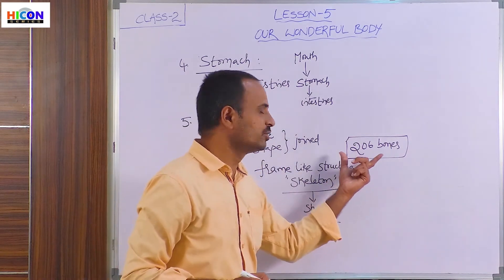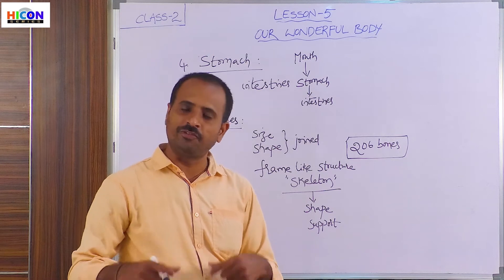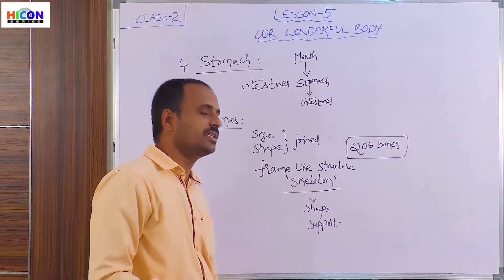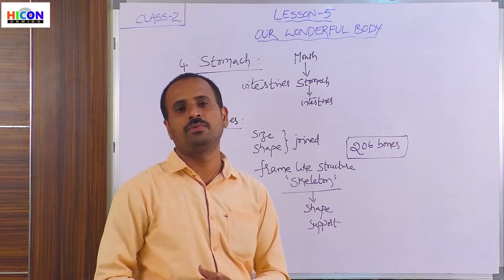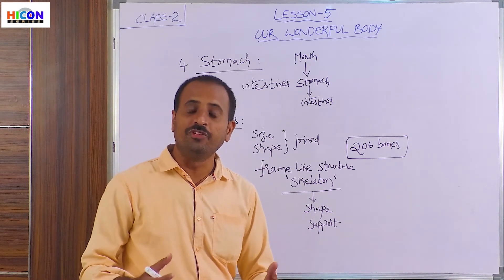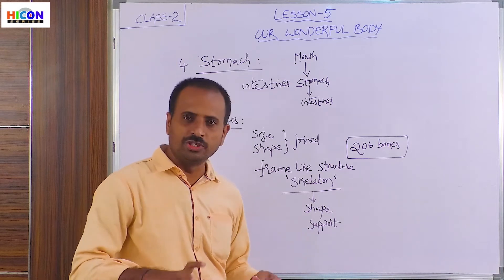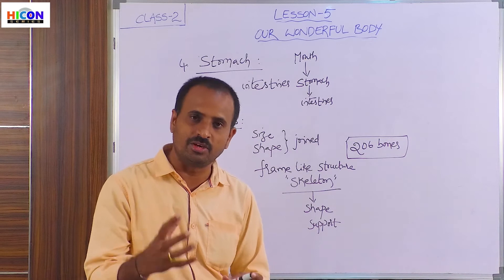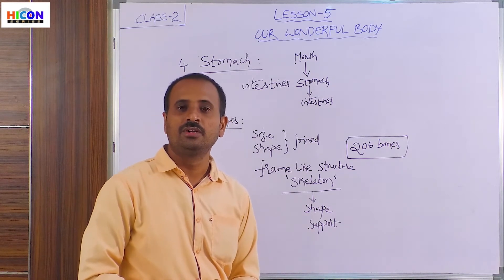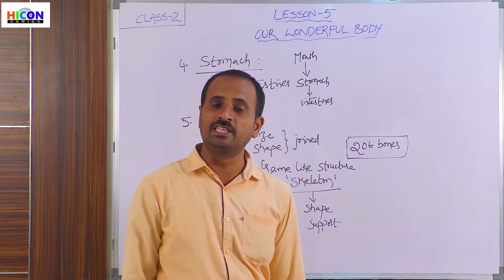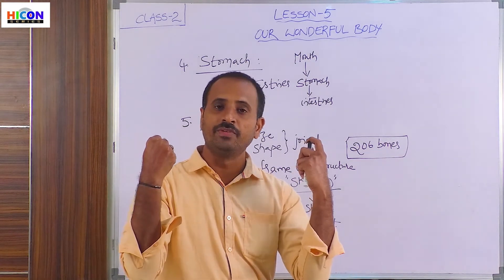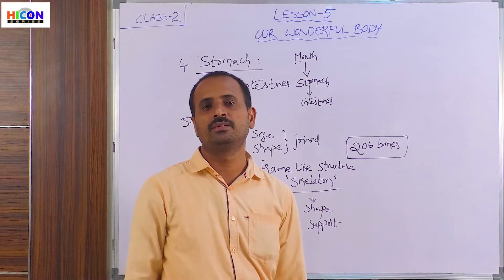All 206 bones join with each other in different ways and form a frame-like structure called a skeleton. Because of this skeleton, we get a shape and support. Because of the joints and the bones, we are able to move various parts of our body. If there are no joints in the bones, our hands and legs would be straight and we would not be able to bend or move our body parts comfortably.